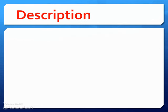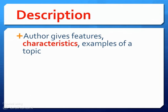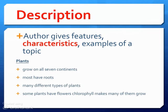The first type of text structure that we're going to look at is description. Description is when the author gives features, characteristics, or examples of a topic. For example, in a text about plants, the author might tell you that they grow on all seven continents, most have roots, there are many different types, some have flowers, and that chlorophyll makes many of them grow. These are all different characteristics or details about the topic plants, and the author has given you these details all together.